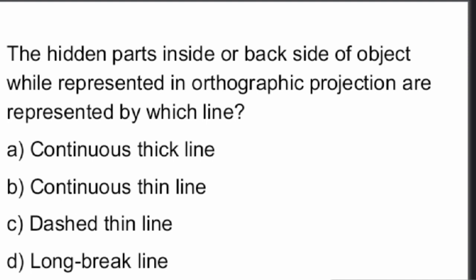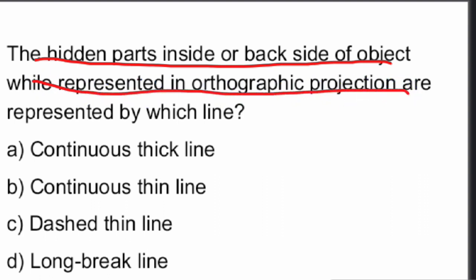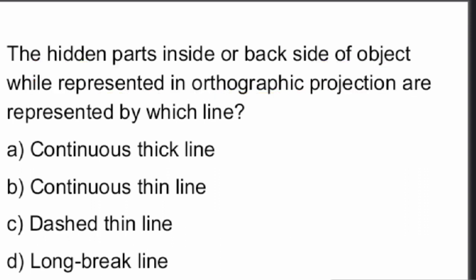Next question: the hidden parts inside or on the back side of an object, when represented in orthographic projection, are represented by which line? They are represented by dashed thin lines.